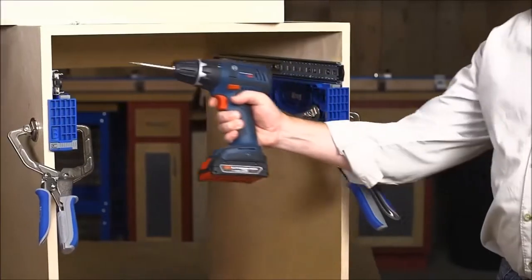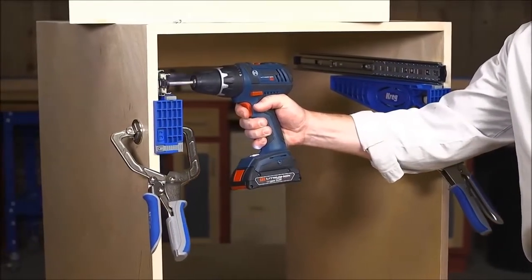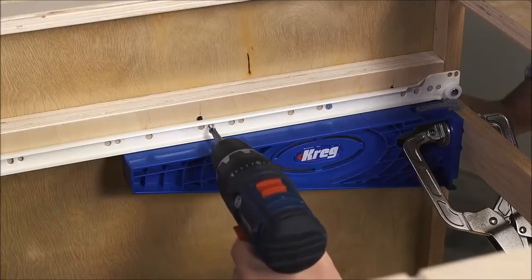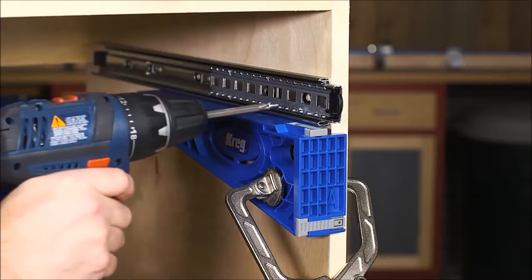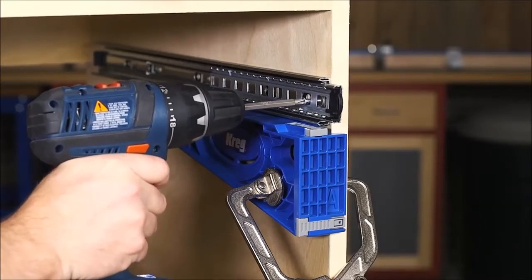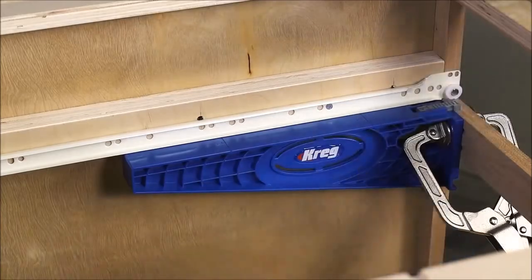Once clamped in place, the jig's brackets support the drawer slide completely, providing that third hand you've always needed. No matter how big or heavy the slide, the drawer slide jig holds it straight and level so you have both hands free to drive in the screws.